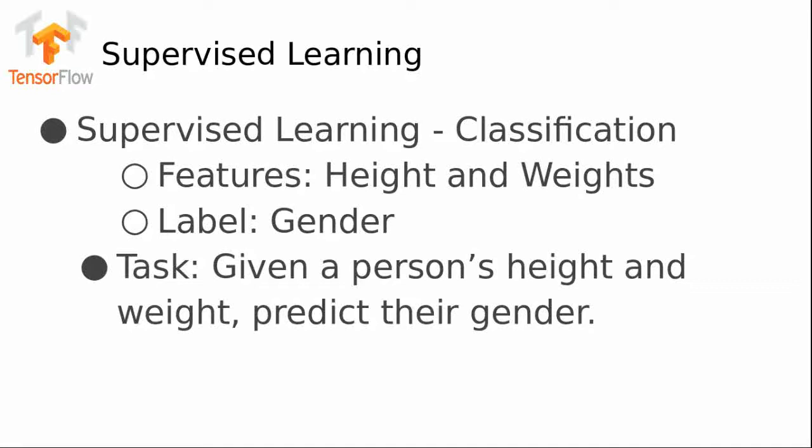Let's take an example to get a hold of these things. Beginning with a classification problem which falls under supervised learning — we'll have some features such as height and weight, and the label could be something like gender. So what we have is the height and weight of certain people, and with the help of this data we'll classify the people into their respective genders.